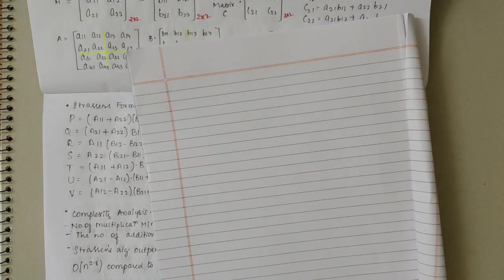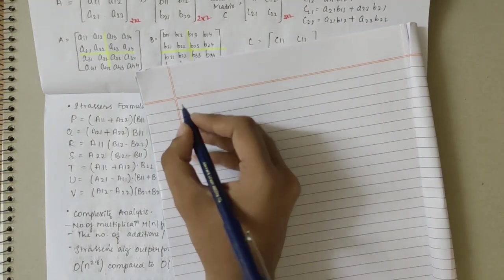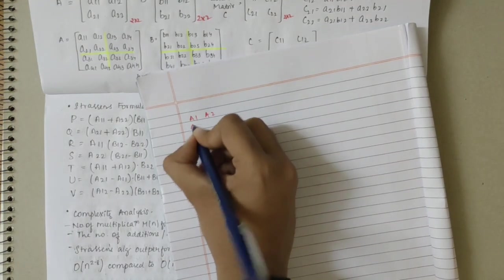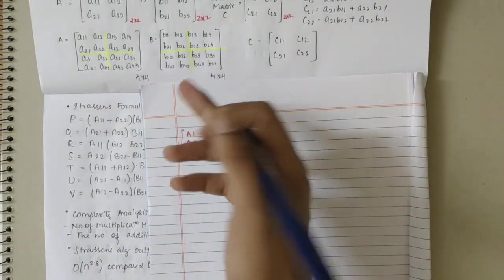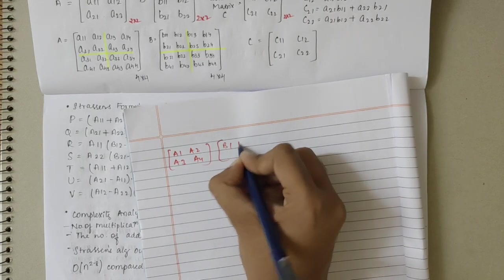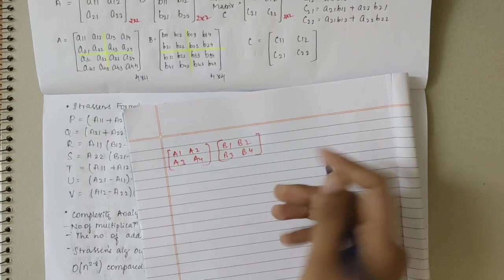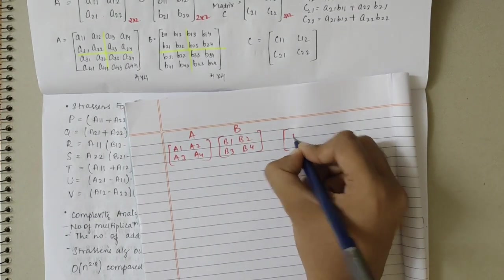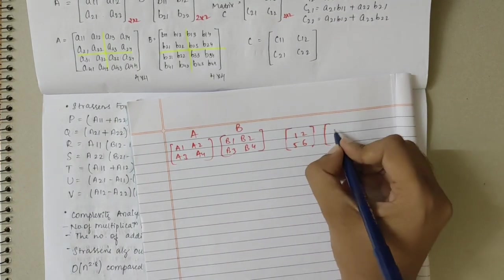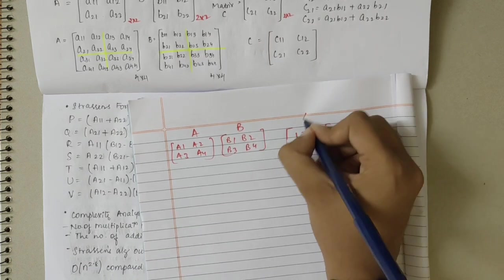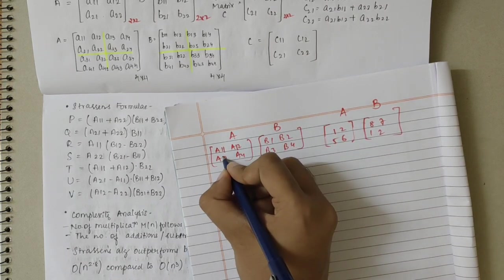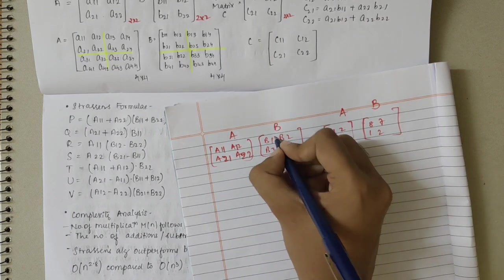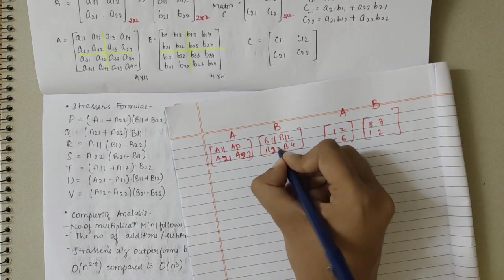Let's look at an example. I'm taking a 2×2 matrix only as larger sizes are time-consuming. Matrix A has values A11=1, A12=2, A21=5, A22=6, and matrix B has B11=8, B12=7, B21=1, B22=2. From these I will calculate the product using Strassen's formulae by computing P, Q, R, S, T, U, and V.